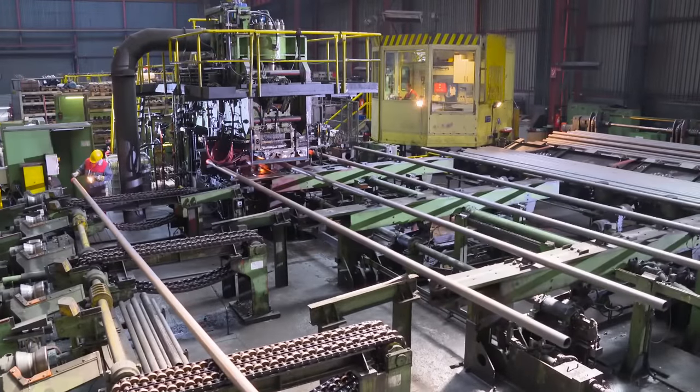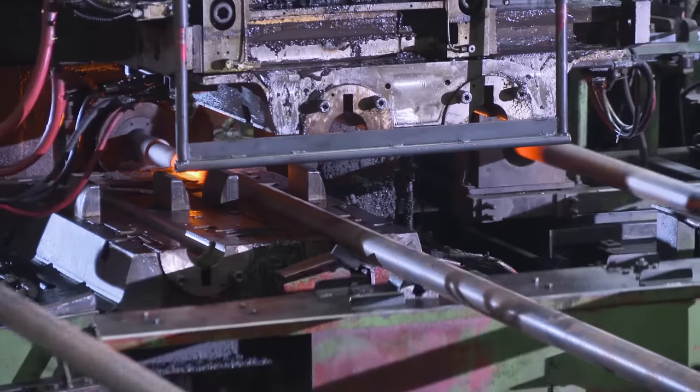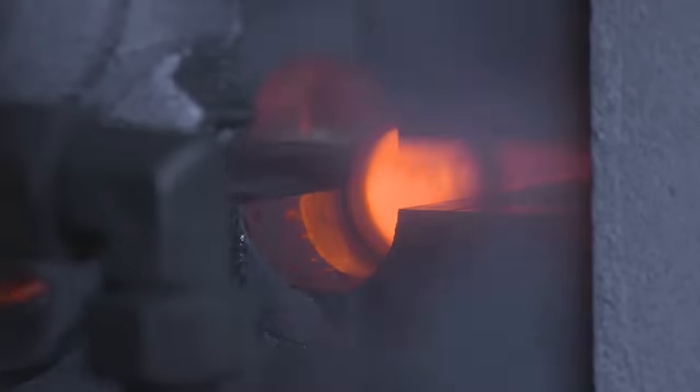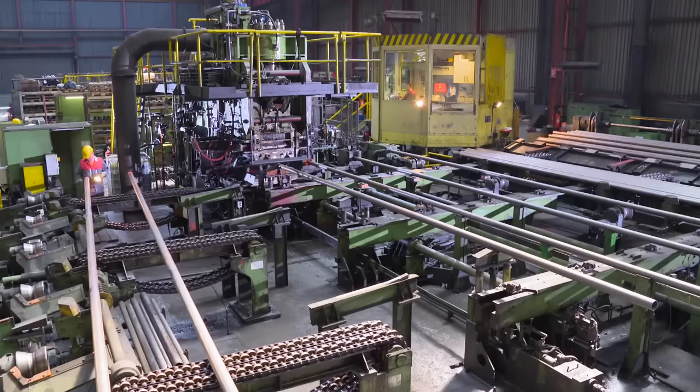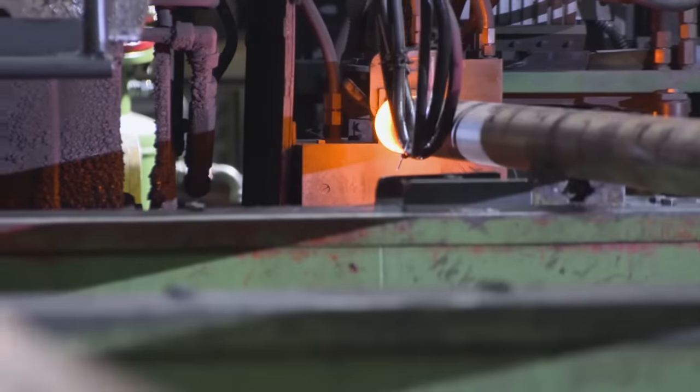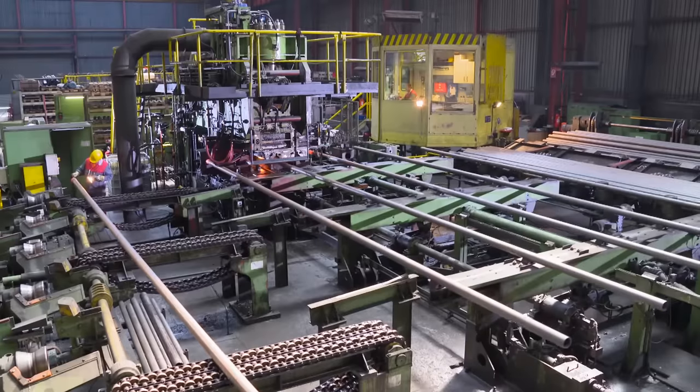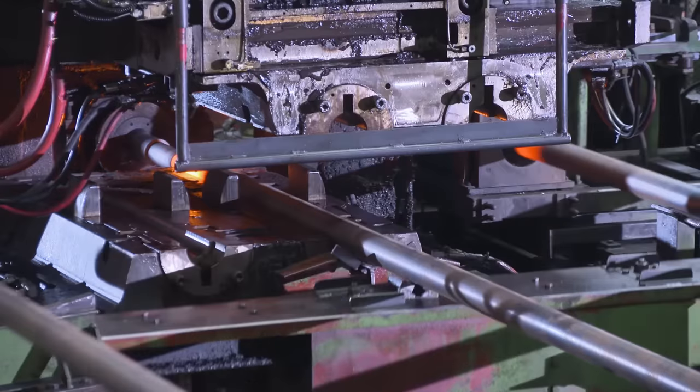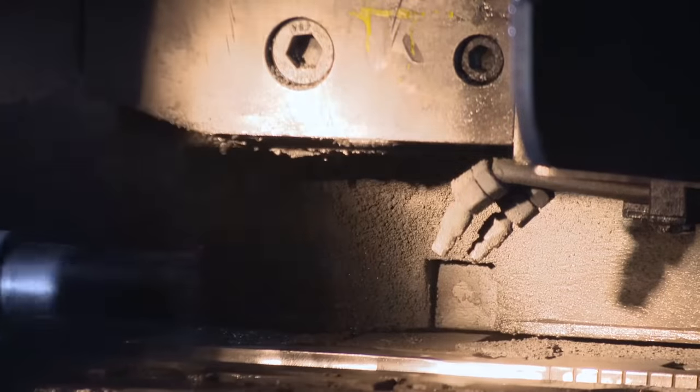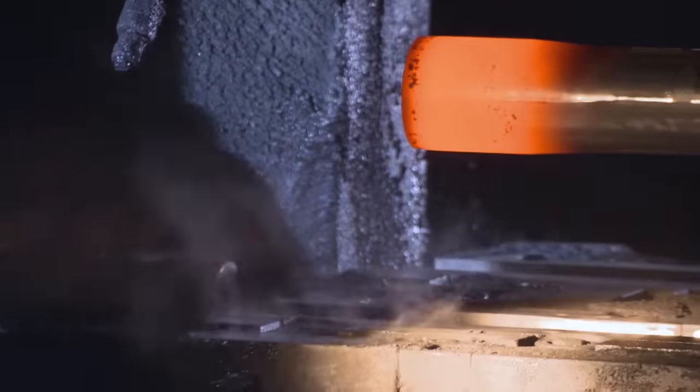When required, tubes can be shipped with ends upset according to API specifications. Special upsets for drill pipes, integral and premium connections are also available. The pipe ends are heated to forging temperatures with induction heaters and are then upset to the required contour in up to three forming steps. The forging is done by using either a mechanical or a mechanical hydraulic upsetter.